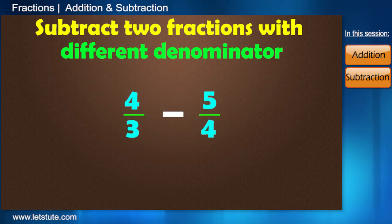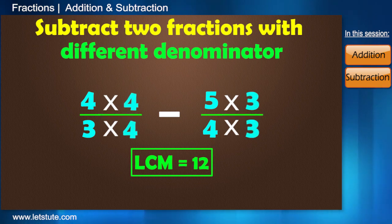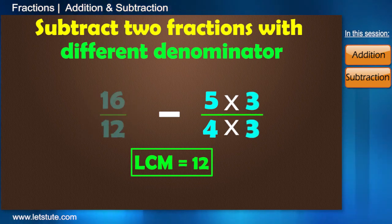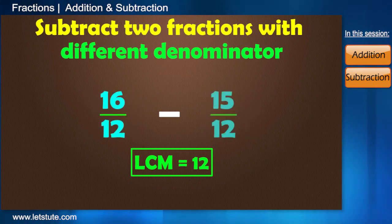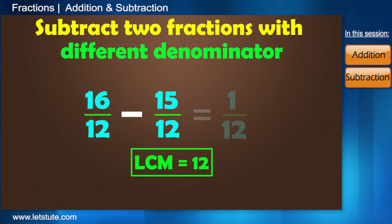Now, here the LCM for 3 and 4 is 12. So, after making the denominators equal, the fractions formed will be 16 by 12 and 15 by 12. We will subtract 15 by 12 from 16 by 12 to obtain the answer as 1 by 12.